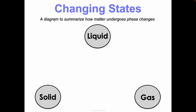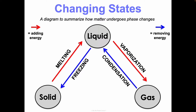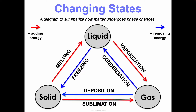This diagram summarizes how matter undergoes phase changes. Red arrows represent adding energy in the form of heat; blue represents removing energy. Going from solid to liquid by adding heat is melting; liquid to solid by removing heat is freezing. Liquid to gas is vaporization; gas to liquid is condensation. Solid to gas is sublimation — skipping the liquid phase entirely — and gas to solid is deposition, also skipping the liquid phase.